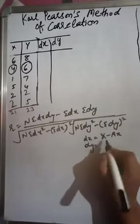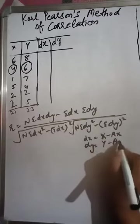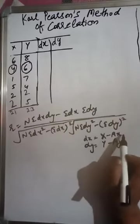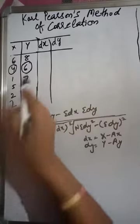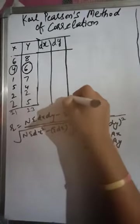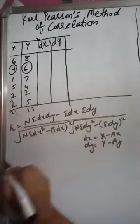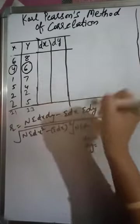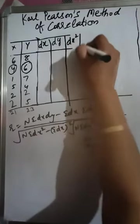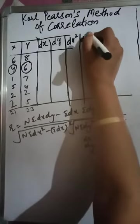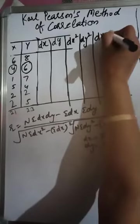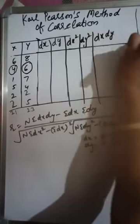For the y series, assumed mean is 6. We compute dx and dy for each observation, then find dx², dy², and the product dx·dy. These columns — dx, dy, dx², dy², and dx·dy — are all required as per the assumed mean formula.